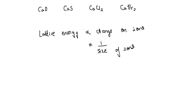In calcium oxide, charge on calcium is +2 and on oxygen is -2. Similarly, in calcium sulphide, calcium is +2 and sulfur is -2. In calcium chloride, calcium is +2 and chlorine is -1. In calcium bromide, charge is +2 on calcium and -1 on bromide.